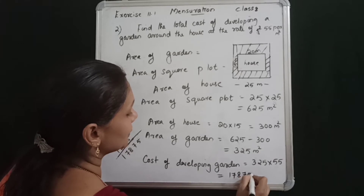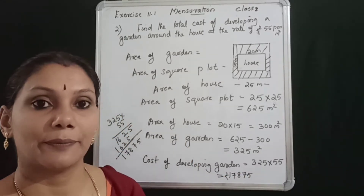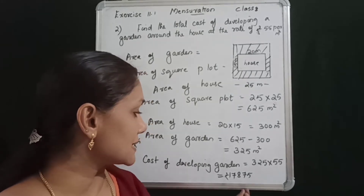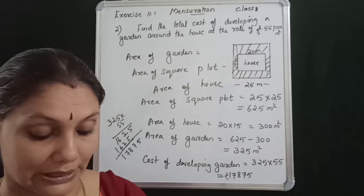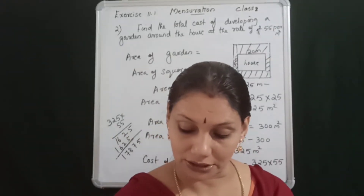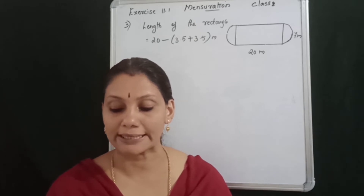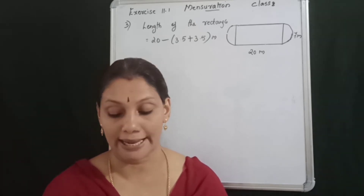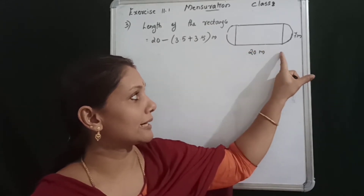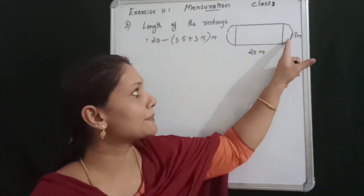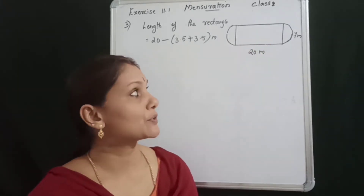325 into 55 equals 17,875 rupees. Now, the shape of a garden is rectangular in the middle and semicircular at the ends. This is the rectangle in the middle, with circles at the ends.